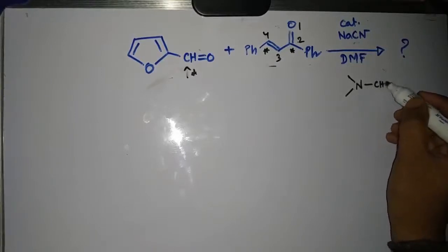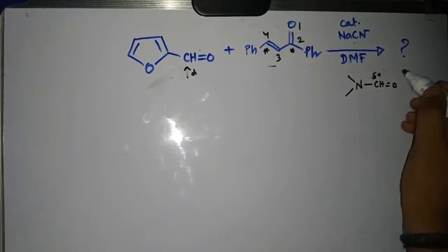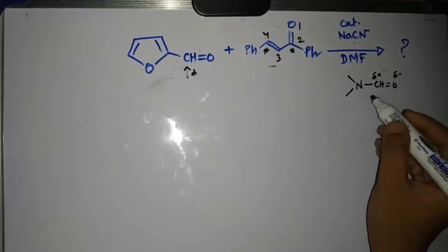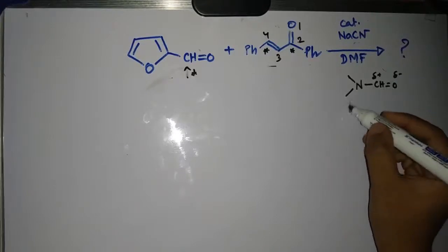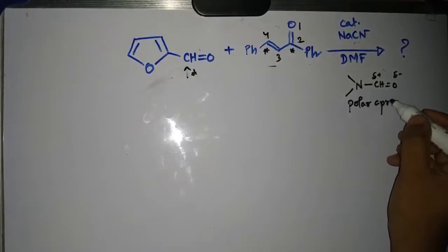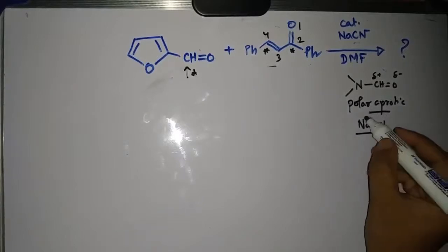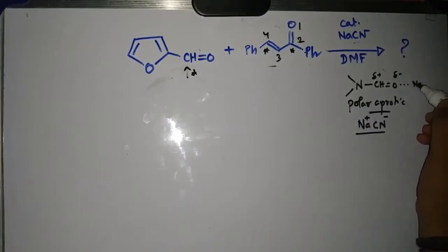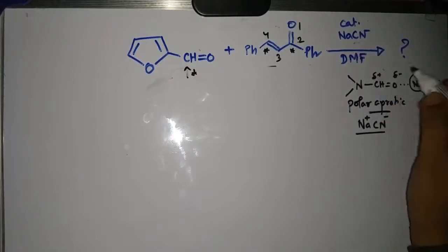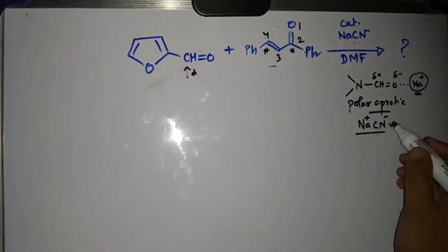This is the structure of DMF solvent. You can see this is a polar solvent because there is a positive end and a negative end. It is an aprotic solvent because there are no replaceable hydrogens present in this molecule. So it is a polar aprotic solvent. When a salt like sodium cyanide is given, the cationic part is stabilized through electrostatic attraction with the negative end of the dipole, and the sodium will be surrounded by solvent molecules, but the CN⁻ will be quite free.